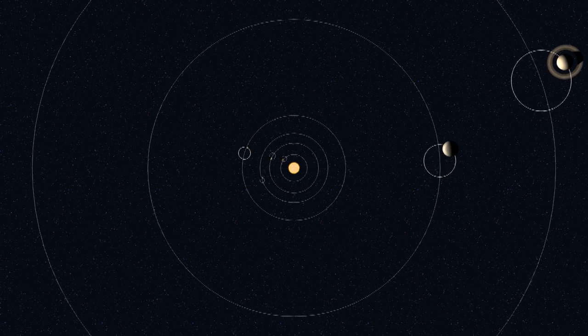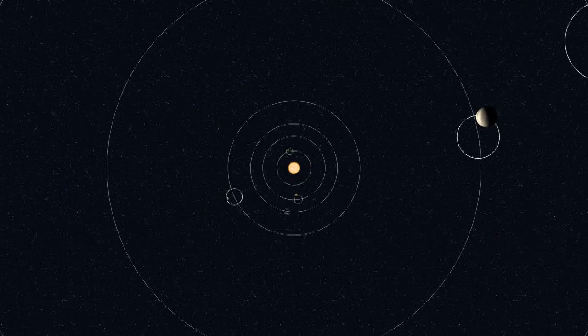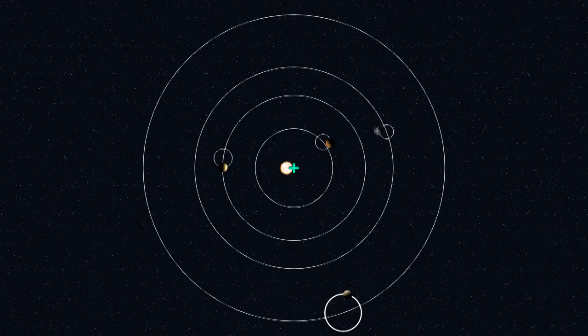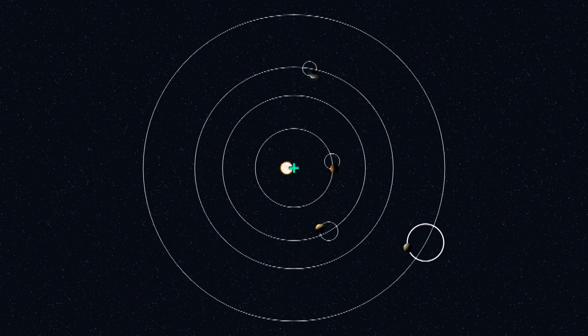So he added the epicycles back in. He moved the Sun away from the center of the solar system. But even with these changes, his model wasn't really any better than Ptolemy's.